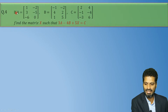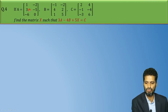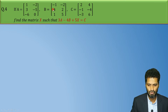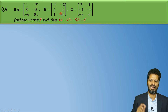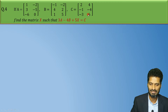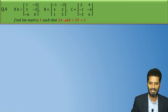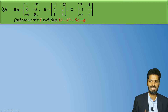The question says: if matrix A is [1, -2, 3, -5, -6, 0], matrix B is [-1, -2, 4, 2, 1, 5], and matrix C is [2, 4, -1, -4, -3, 6], then we have to find matrix X such that 3A minus 4B plus 5X equals C.